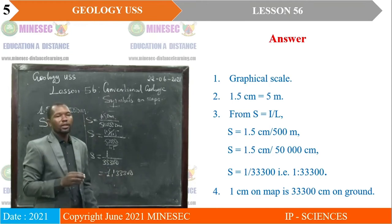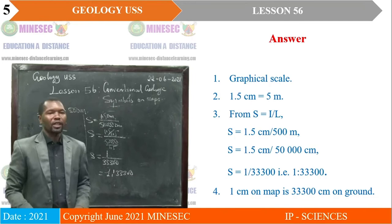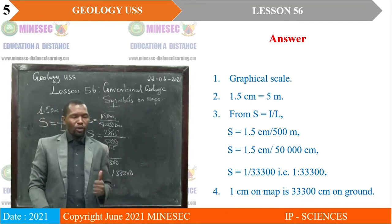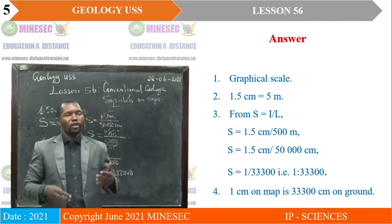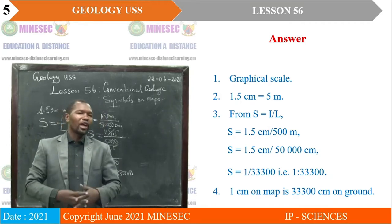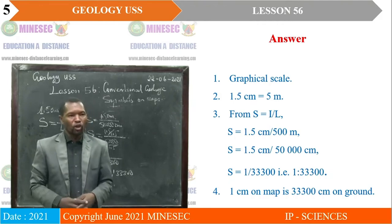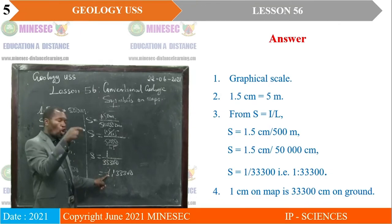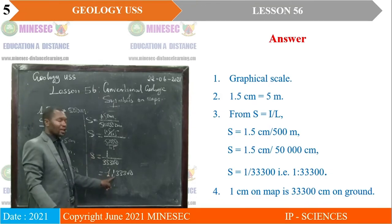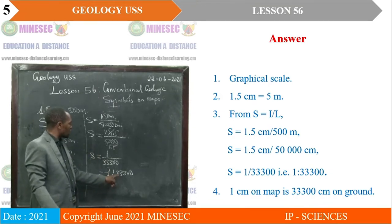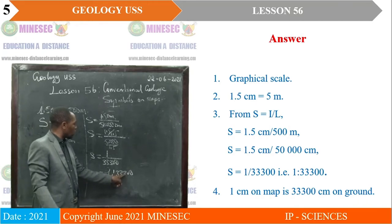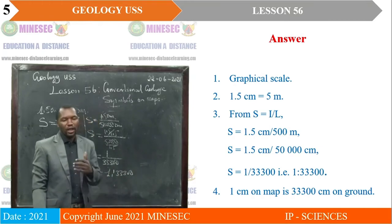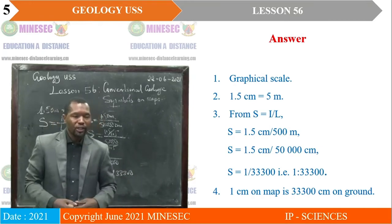The last part of the map question requires us to express the statement scale. Stated as: one centimeter on the map represents 33,300 centimeters on the ground. That is our statement scale.